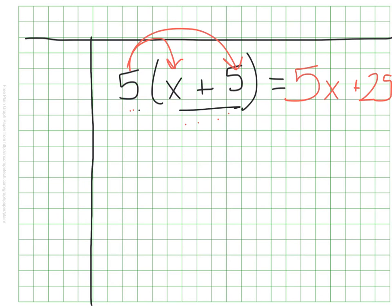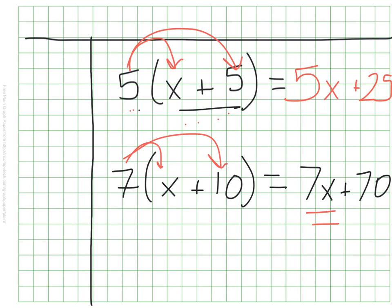Go ahead and do one without me. So let's do 7 times the quantity of x plus 10. How'd you do? The 7 should have been multiplied by the x to get 7x's, and the 7 should have been multiplied by the 10 to make 70. Notice my operation is remaining addition on all of these. It is whatever it was inside the parentheses.